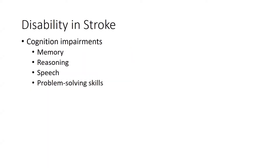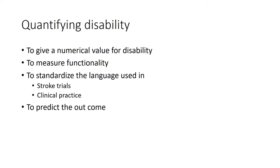Cognitive impairments affect memory, reasoning, speech, and problem-solving skills, mainly impacting a person's functionality and ability to perform activities of daily living. There are various areas of disability in a post-stroke patient, and we need to quantify this disability — to give a numerical value to disability or functionality, to standardize the language used in stroke trials and clinical practice, and to predict final outcomes.